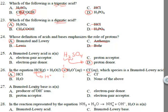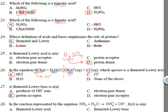A Bronsted-Lowry base should be a proton acceptor. In the previous example, water is your Bronsted-Lowry base — water is accepting a hydrogen. It goes from H2O to H3O+, adding a hydrogen and a positive charge, which is why it goes from two hydrogens to three hydrogens.